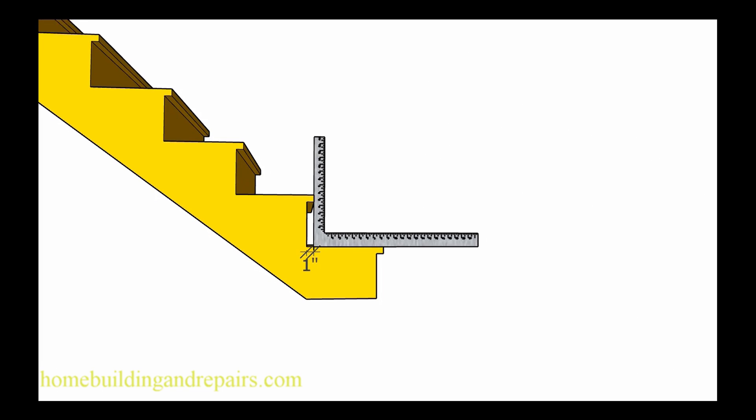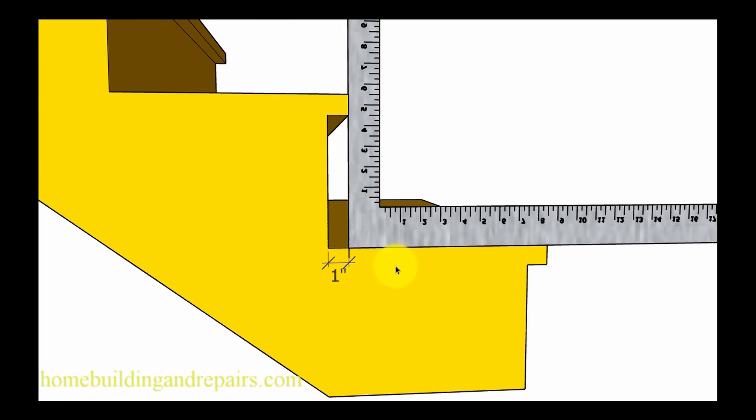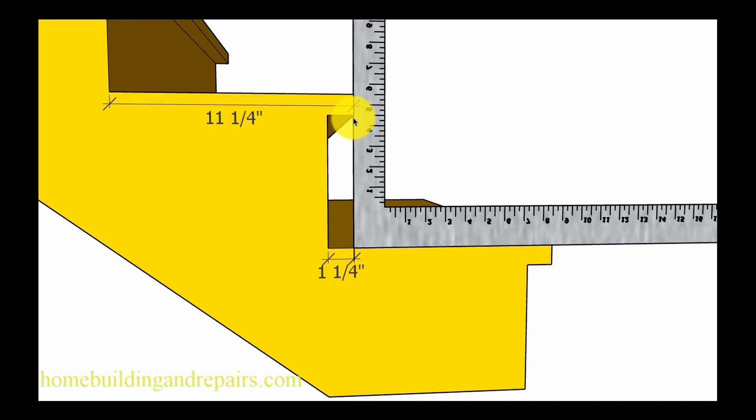Now in our next example for the overhang we're going to be dealing with the same situation where we have a one inch overhang. All you would need to do would be to add another quarter of an inch to the length of the stair tread to provide you with an eleven and a quarter inch long step.